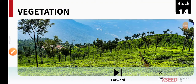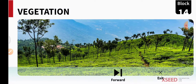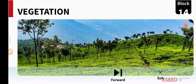Namaste students. Welcome to our social science class. In today's class we are going to learn about a new topic — vegetation. This is block 12.3. What is vegetation? Vegetation means the plants, the grass, or the types of trees that grow in a region.